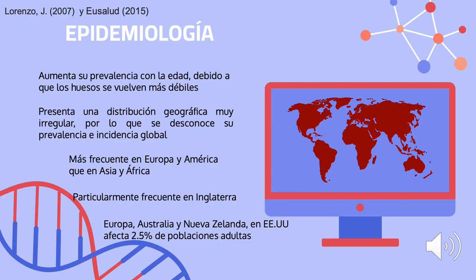En lo referente a la epidemiología, tenemos que esta enfermedad aumenta su prevalencia con la edad, debido a que los huesos se vuelven más débiles. Presenta una distribución geográfica muy irregular, por lo que se desconoce su prevalencia e incidencia global. Esta es más frecuente en Europa y América que en Asia y África. Su prevalencia resulta más frecuente en Europa, Australia y Nueva Zelanda que en Estados Unidos, donde afecta al 2.5% de las poblaciones adultas, y es particularmente frecuente en Inglaterra.